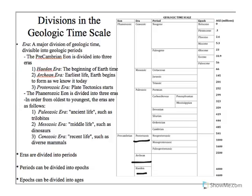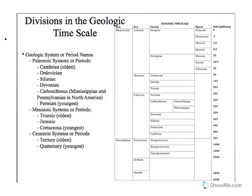Then we jump into the Phanerozoic, which also has three eras. The first is the Paleozoic — the oldest of the Phanerozoic, with the most ancient life. Then we have the Mesozoic, which means middle life, where we find things like dinosaurs. And then the Cenozoic, which is the newest life — that's where we live. Now, eras are broken down into periods, and certain periods are also broken down into epochs.